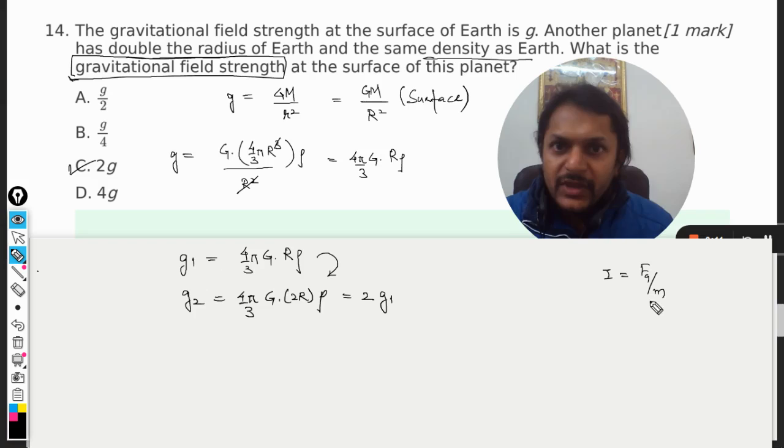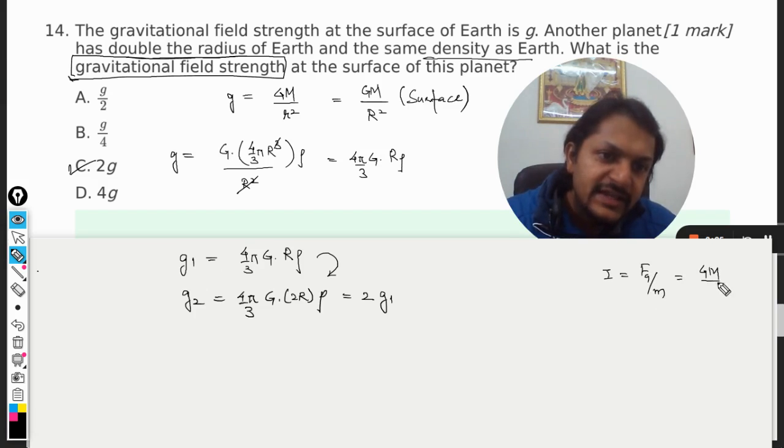And if you put the value of gravitational force here, what you find is that the formula becomes this: at the surface, or I can say small r square, and at the surface the intensity will be given by GM by capital R square.